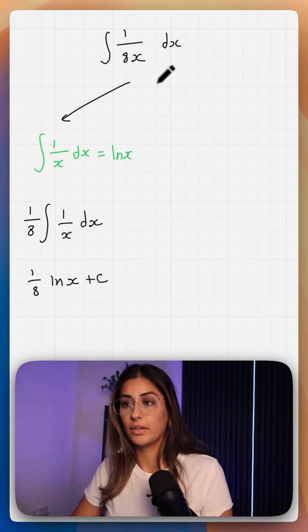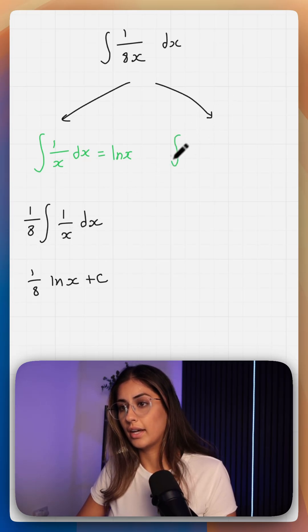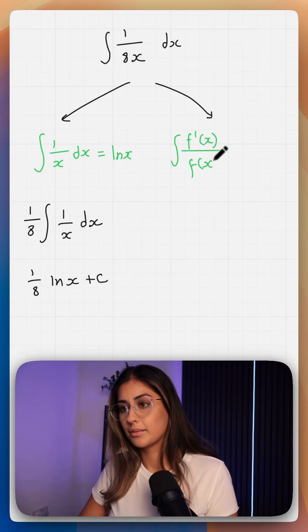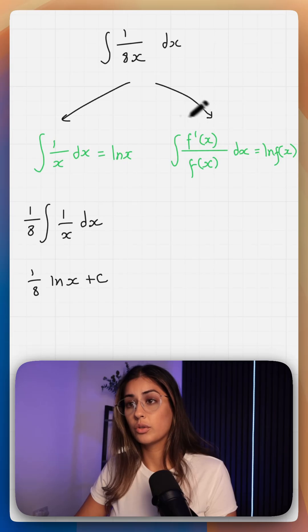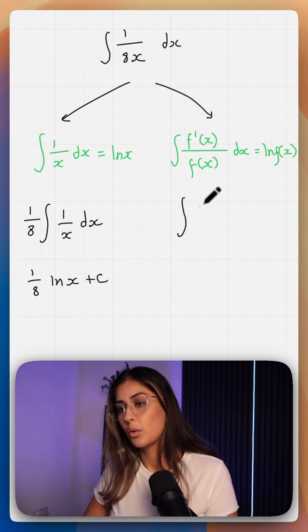There is another way you can approach this, and the other way is using the rule that f dash of x over f of x is equal to ln of f of x. Using this rule you could potentially write 1 over 8x dx in a slightly different way.